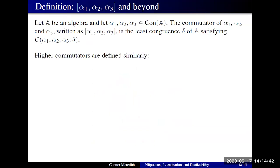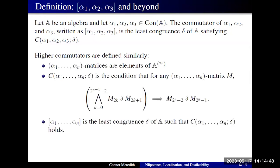So it makes sense to talk about the least such delta that satisfies this condition, and that's exactly what our commutator of alpha-1, alpha-2, and alpha-3 will be. Higher commutators are defined completely analogously — instead of saying three in your head, say n in your head.